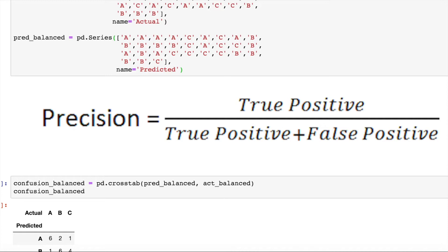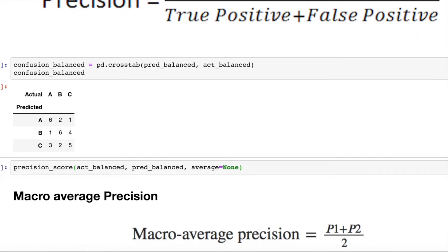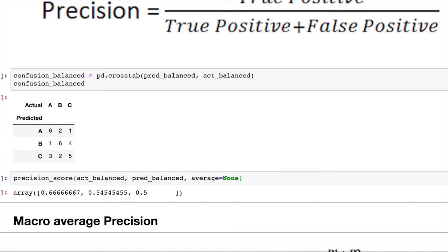I first print out the confusion matrix and this is how the confusion matrix looks like. Now, if I just calculate the precision score for individual classes, this is the value that I get.